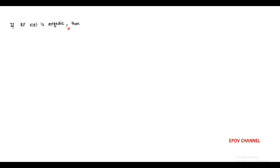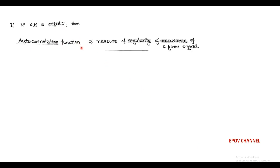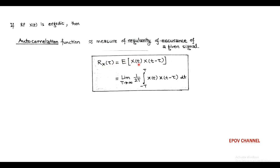If we consider random process x(t) to be ergodic, then its autocorrelation function measures the regularity of occurrence of a given signal, given as R(τ) = E[x(t)·x(t−τ)]. In terms of the continuous sample function, autocorrelation R(τ) = limit T→∞ of (1/2T) integral from −T to T of x(t)·x(t−τ) dt, where x(t) is a sample function of random process X(t).